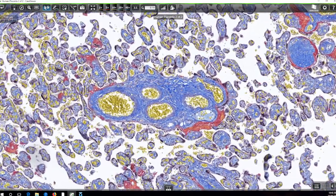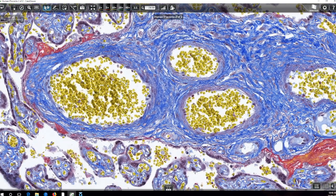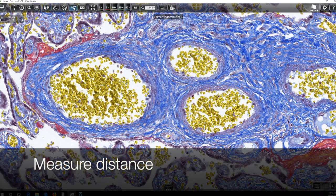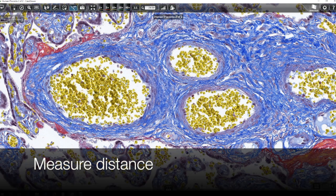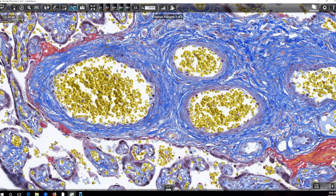The next option that we have using this software is to perform some basic measurement functions. So as you can imagine, a pathologist or researcher may be interested in generating quantifiable data from their histological section. So here we can just drag across using the cursor tool here and we can obtain an approximate measurement for each of these blood vessels.